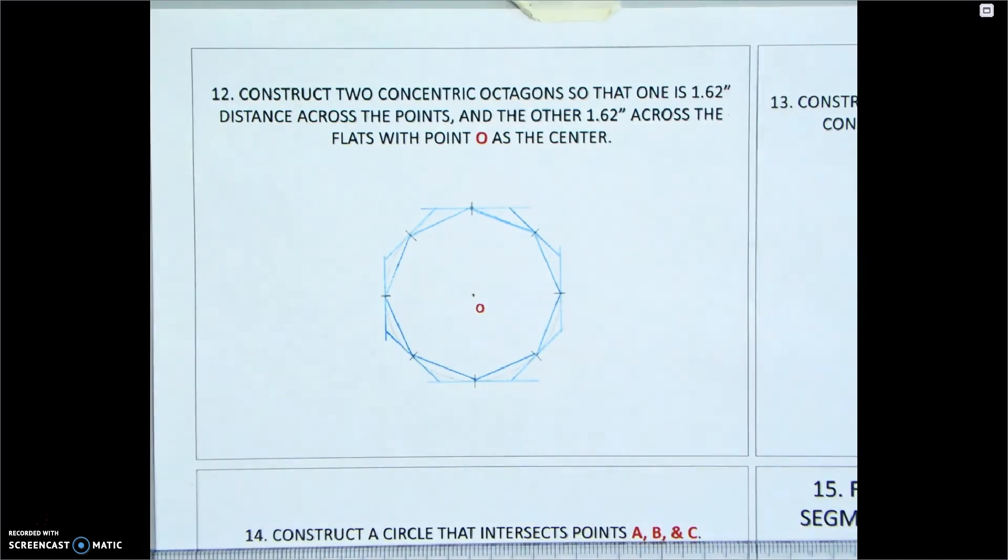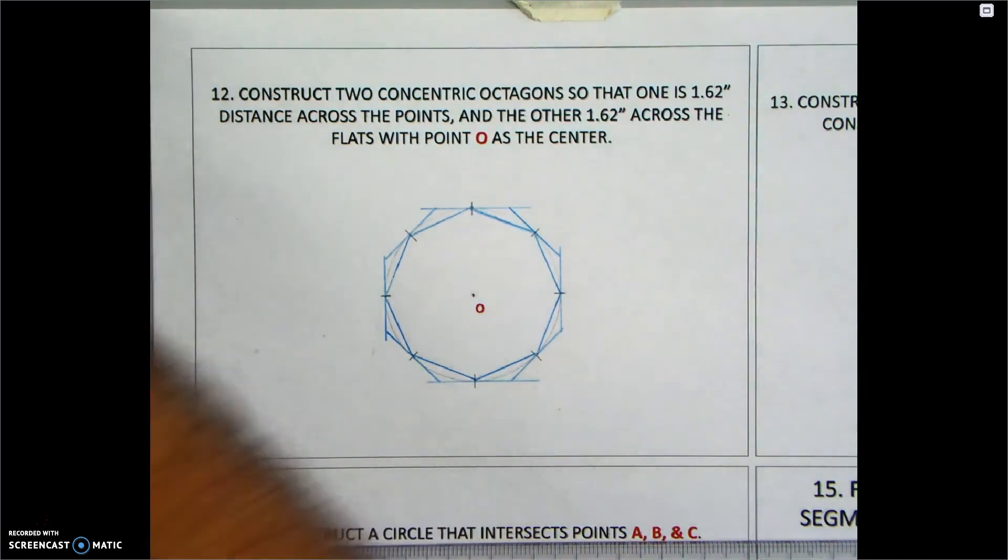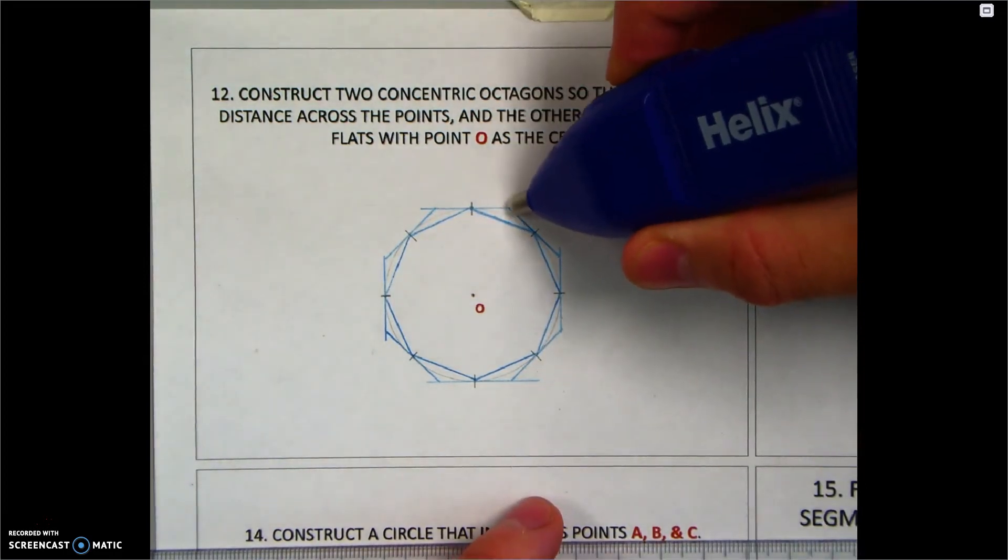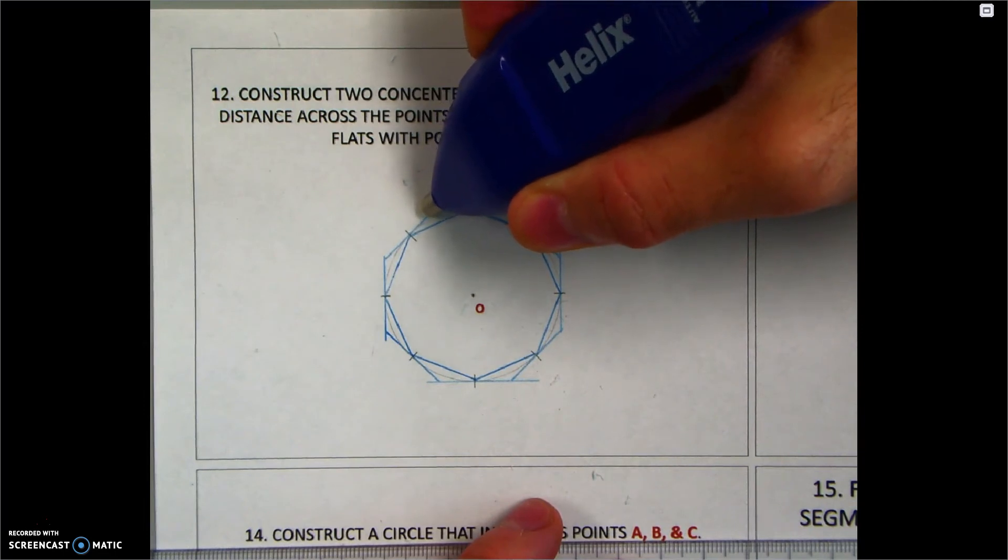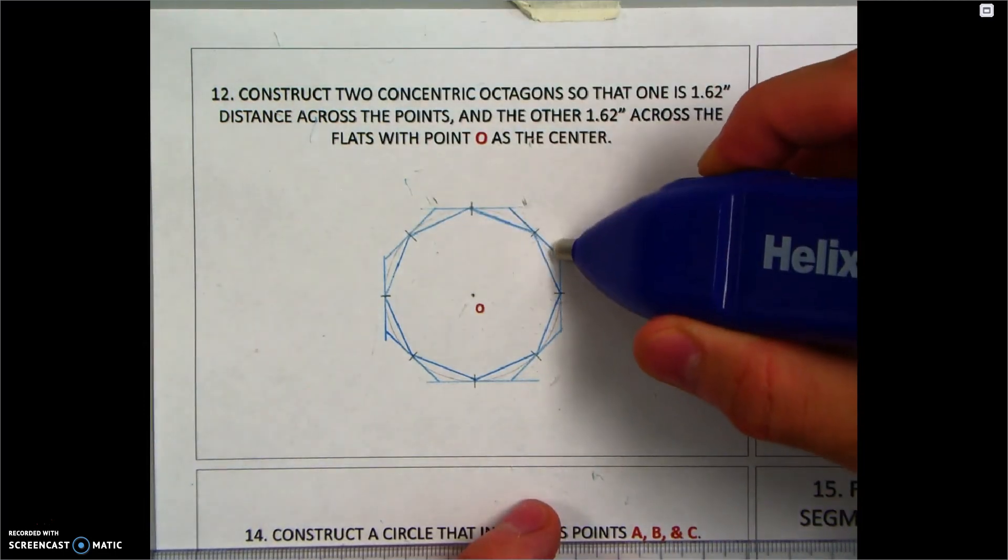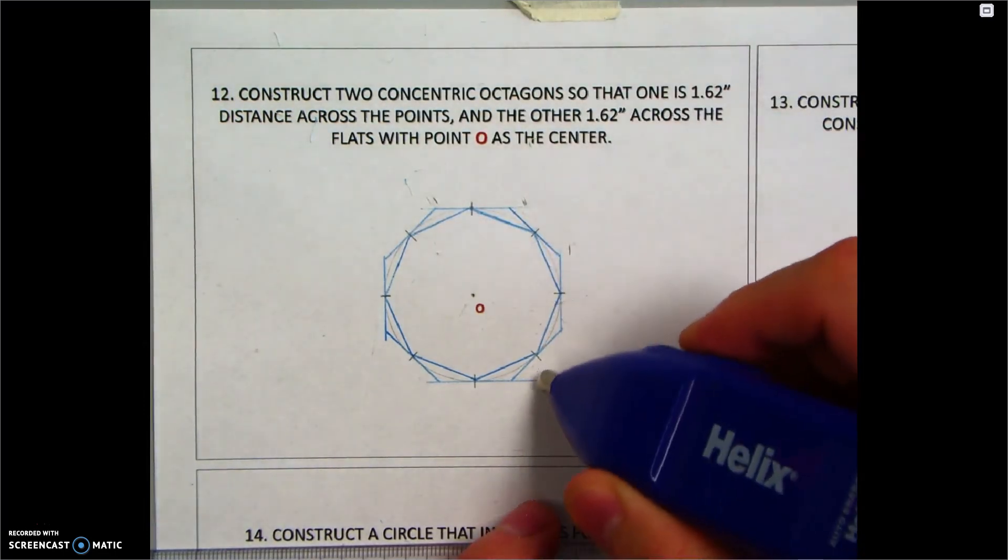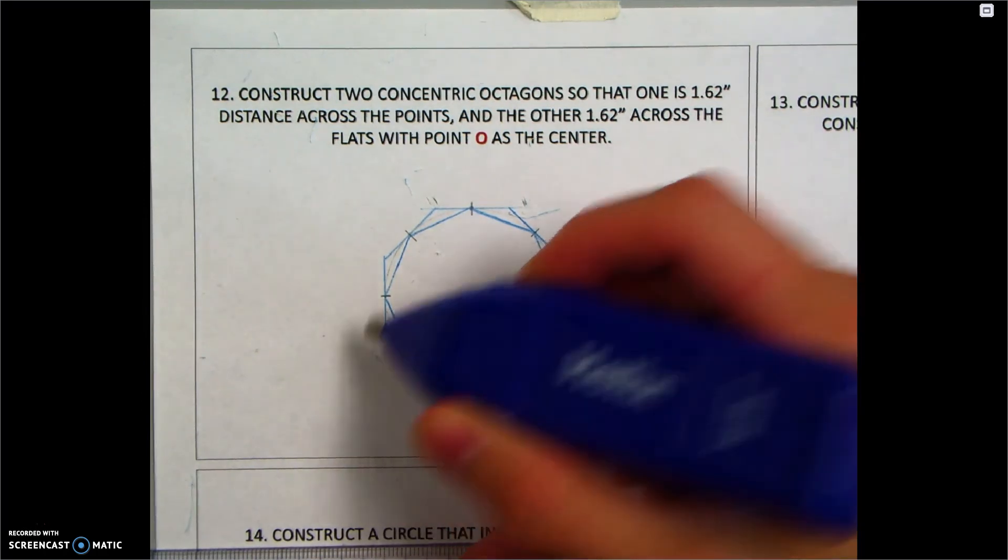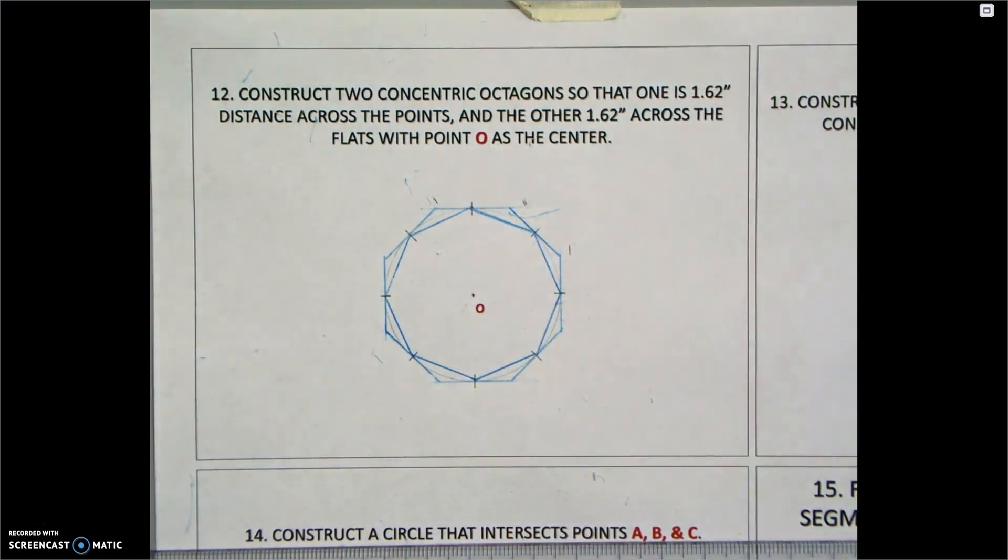Now we have a circumscribed octagon, which all you've got to do is then clean up any overlaps. So we get rid of the little pieces that stick out on any of the sides so that we have our regular octagon.